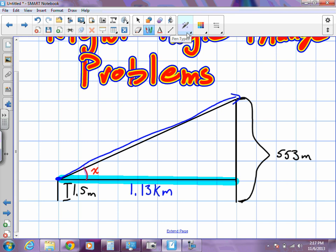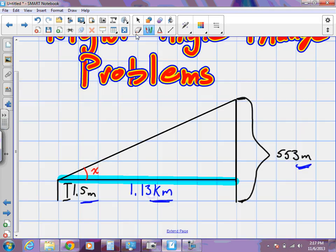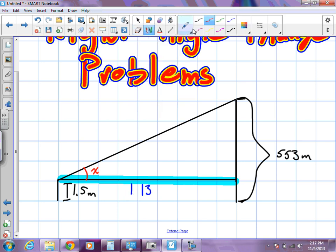So first of all we need to convert. I have two things in meters and another thing in kilometers. How can we convert these kilometers to meters? Yeah, let's times it by 1,000, which will give us what value? How many spaces do we move in? Just two? Three. So we're actually 1,130 meters from the base of the CN Tower.